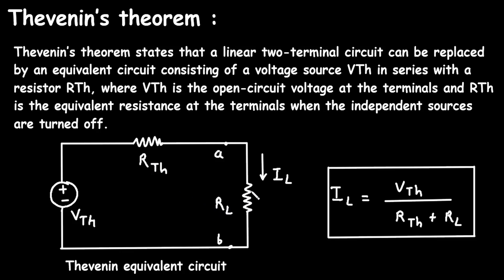Consider a load resistor RL connected across the terminals A and B. The current IL flowing through the load resistor RL can be calculated using Ohm's law and the Thevenin equivalent circuit. The formula for the load current is IL equals Vth divided by the sum of Rth and RL.